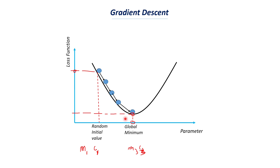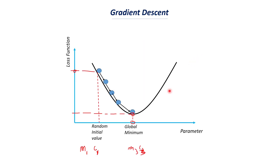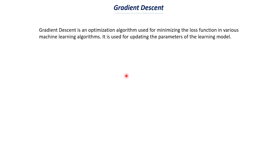Gradient descent is an optimization algorithm used for minimizing the loss function in various machine learning algorithms. It is not only used in linear regression but also in any kind of machine learning models and in deep learning as well. We minimize the loss function by constantly updating the parameters of the learning model — this is called gradient descent.